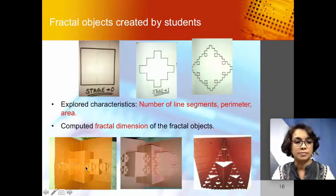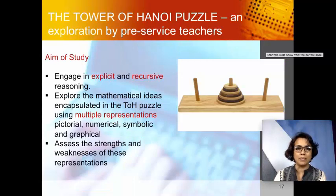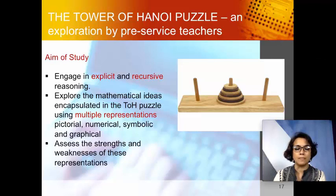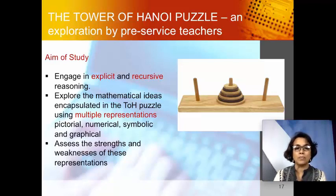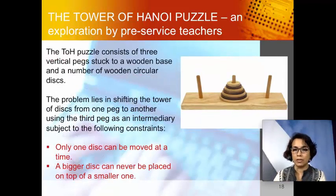The next task is the Tower of Hanoi puzzle, explored by a group of pre-service teachers. The aim was to enable teachers to engage in explicit and recursive reasoning, to explore the mathematical ideas encapsulated in the Tower of Hanoi using multiple representations — pictorial, numerical, symbolic, and graphical — and to assess the strengths and weaknesses of these representations. The original problem consists of three pegs and circular discs of reducing radii positioned on one peg. The goal is to shift the entire tower from one peg to another, with the conditions that only one disc can be moved at a time, and a larger disc may never be placed on top of a smaller one.